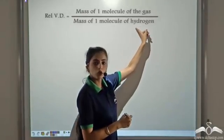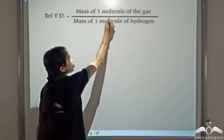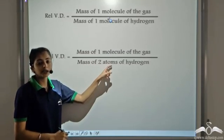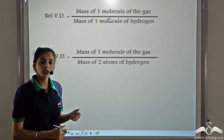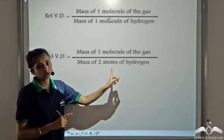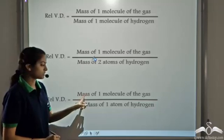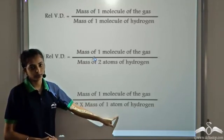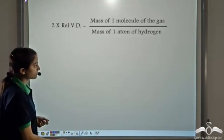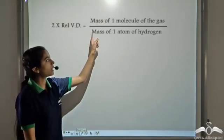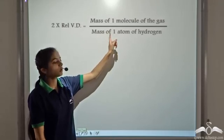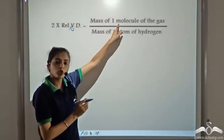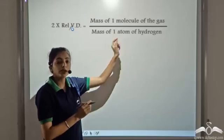We know the hydrogen molecule is made of two atoms, that is H₂. So we get the relative vapour density equal to the mass of one molecule of the gas divided by the mass of two atoms of hydrogen. We can also write this as mass of one molecule divided by mass of one atom of hydrogen, which gives us: 2 × relative vapour density = mass of one molecule of the gas divided by mass of one atom of hydrogen.